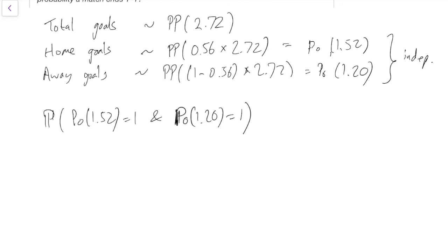But because we're told by the theorem that these are independent, then to get the probability of them both, we just multiply them. So that's the probability of the Poisson 1.52 equals 1 times the probability of the Poisson 1.20 equals 1.